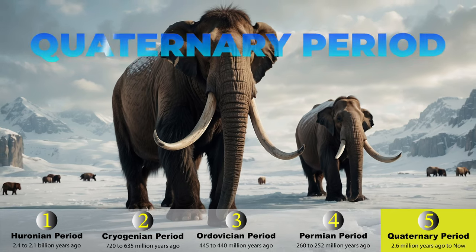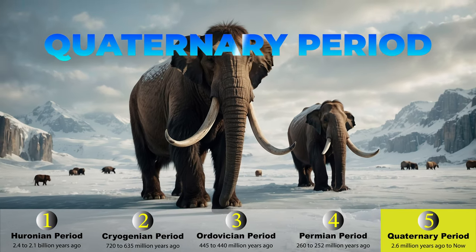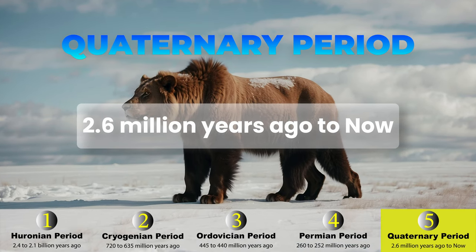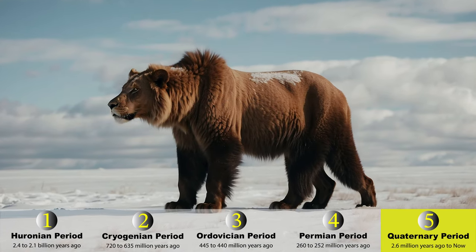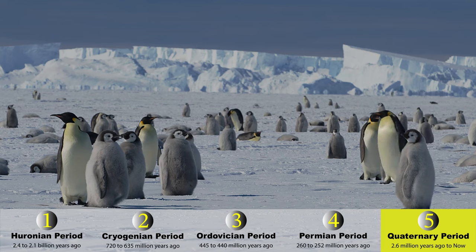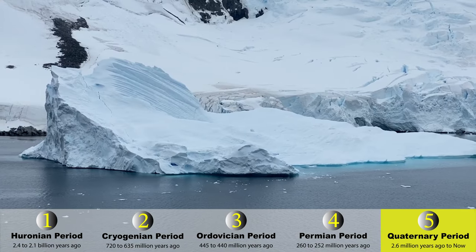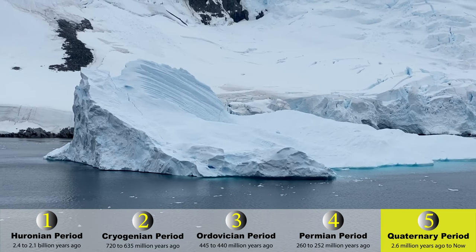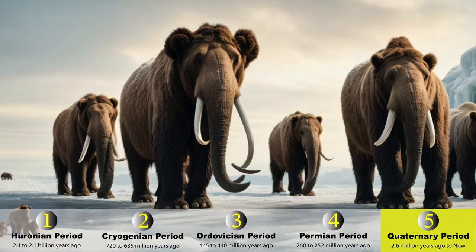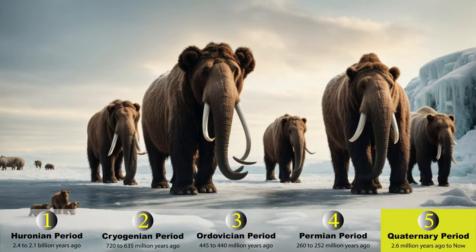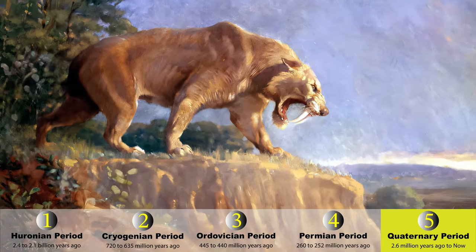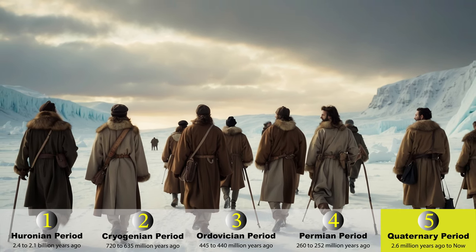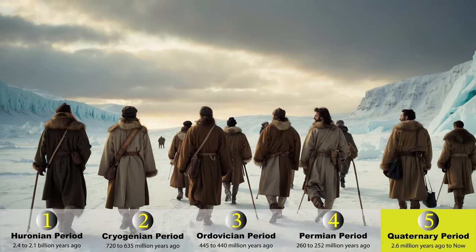The fifth and last major ice age is the Quaternary period. It started 2.6 million years ago and continues to the present day. This is the ice age we know best. Glaciers marched across continents, carving valleys and sculpting landscapes. Woolly mammoths roamed, saber-toothed tigers hunted, and we — Homo sapiens — rose to our prime in this icy symphony.